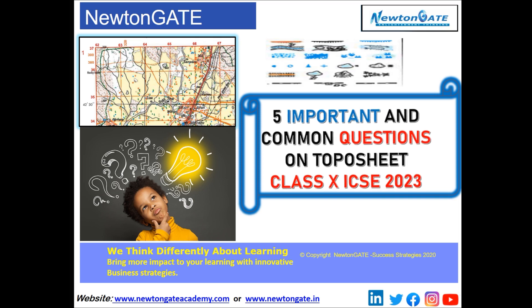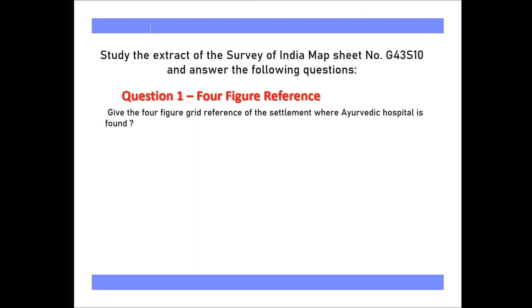In our ICSE 2023, we have two maps: G43S7 and G43S10. Before proceeding, I would say that the extract I am using is of the survey map G43S10. So the four-figure grid reference is our first topic.